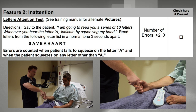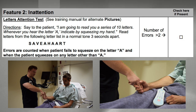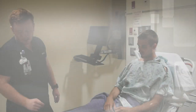For inattention, say to the patient: 'I am going to read you a series of 10 letters. Whenever you hear the letter A, indicate by squeezing my hand.' Read letters from the following list. The following will show a patient who passes this section and a patient who does not pass this section.